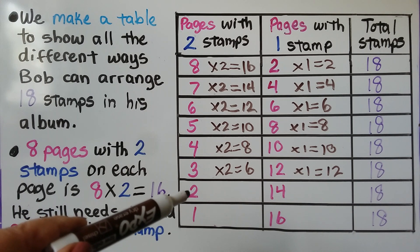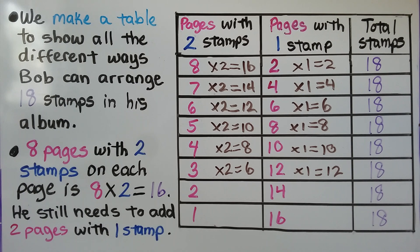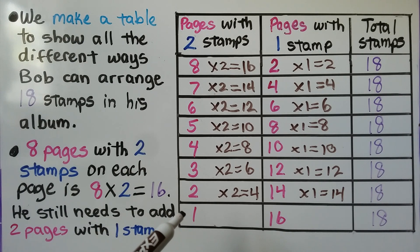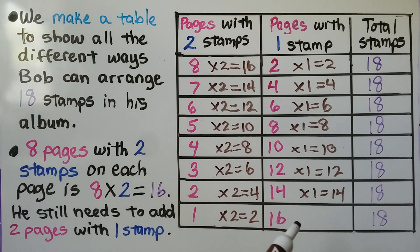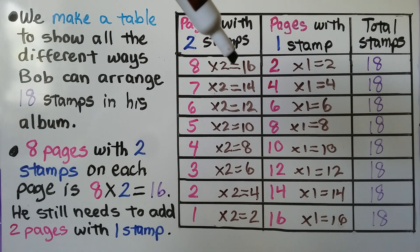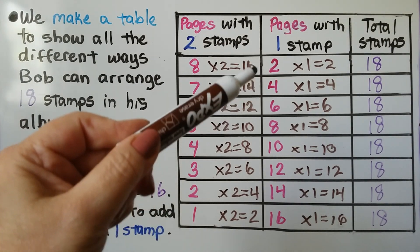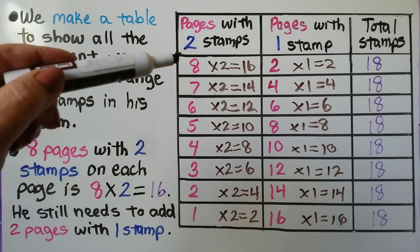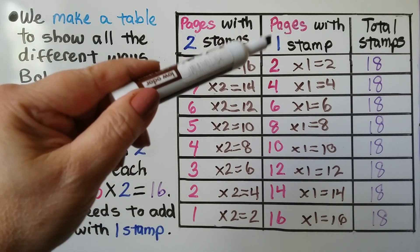So do you know what would be here for two pages with two stamps? We would do two times two, which is equal to four. And we'd have 14 pages with one stamp each — that's 14 times one, which is 14. And if we had one page with two stamps, that would be one times two, equal to two. We'd have to add 16 pages with one stamp each: 16 times one equals 16. And 2 plus 16 is equal to 18. So there are plus signs between each one. We have 8 times 2 plus 2 times 1 to equal 18, multiplying the number of pages times how many stamps are on that page.